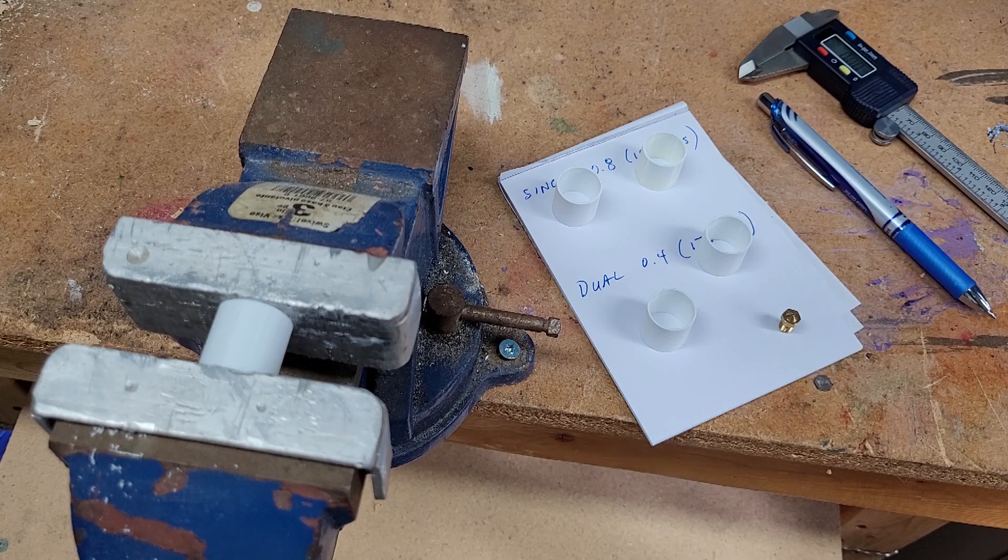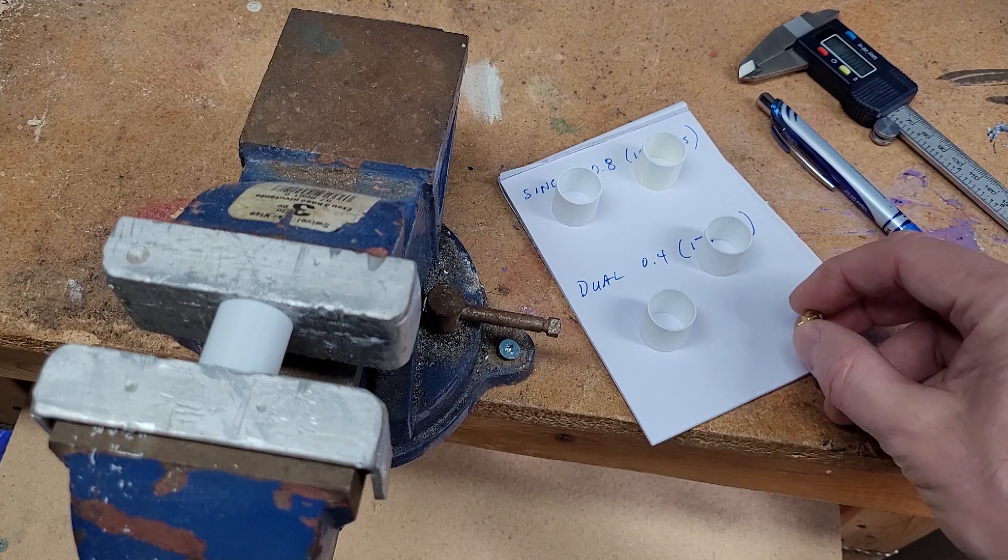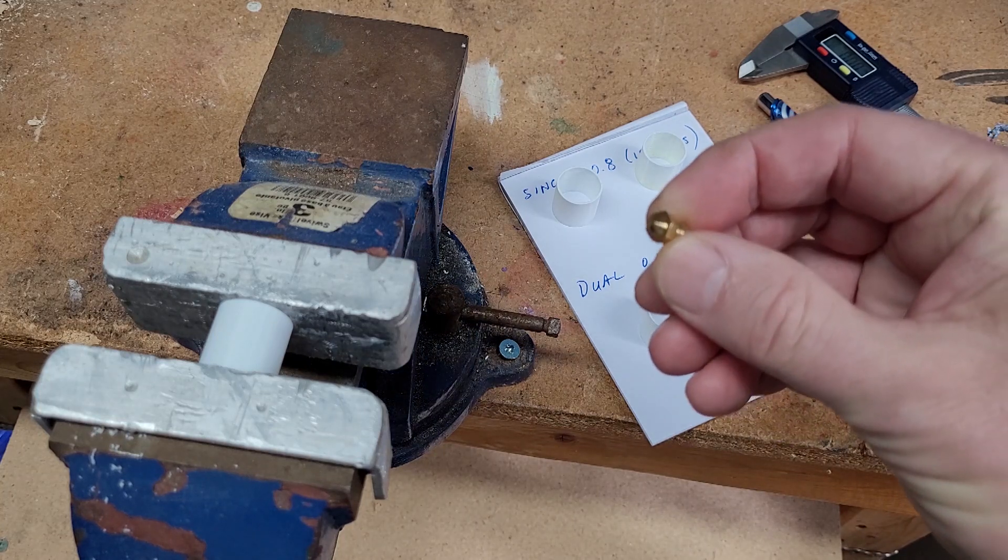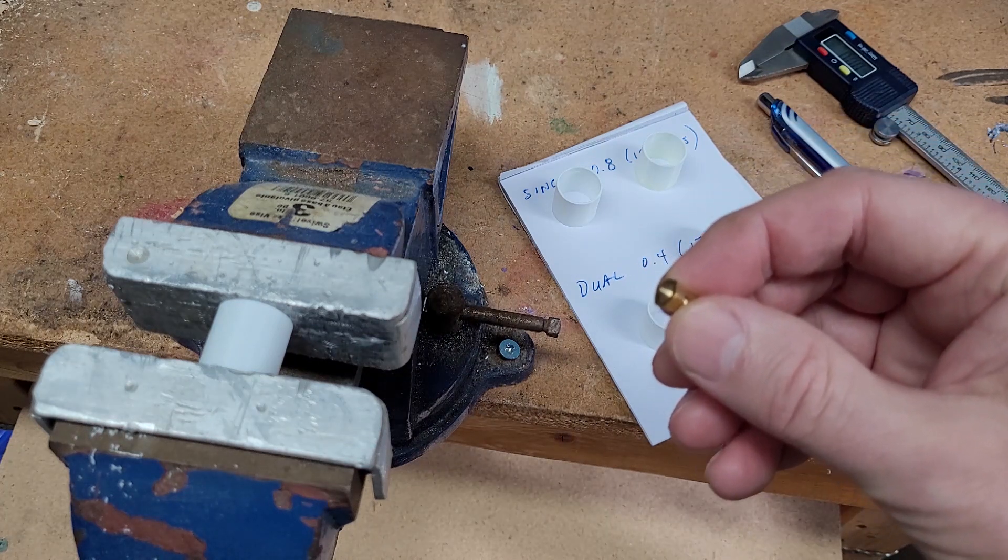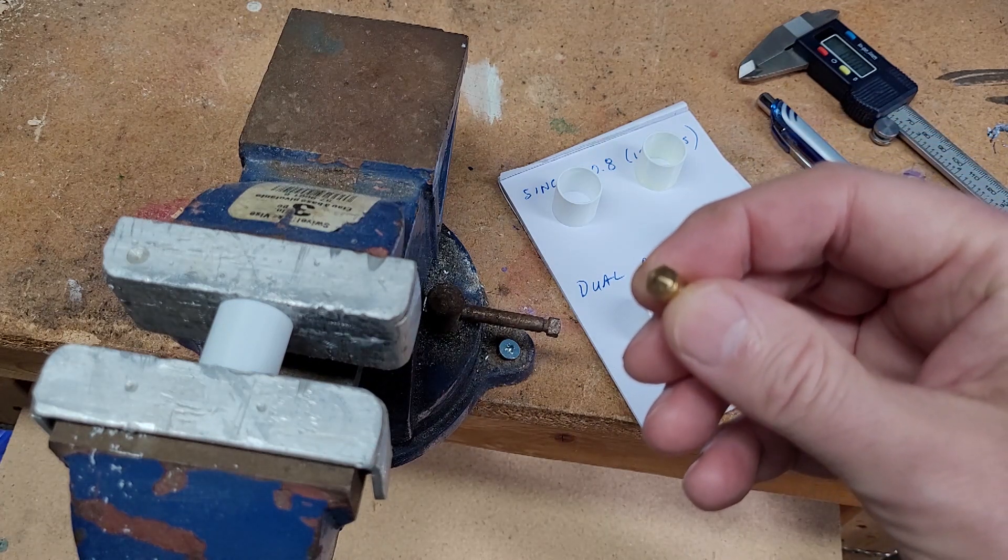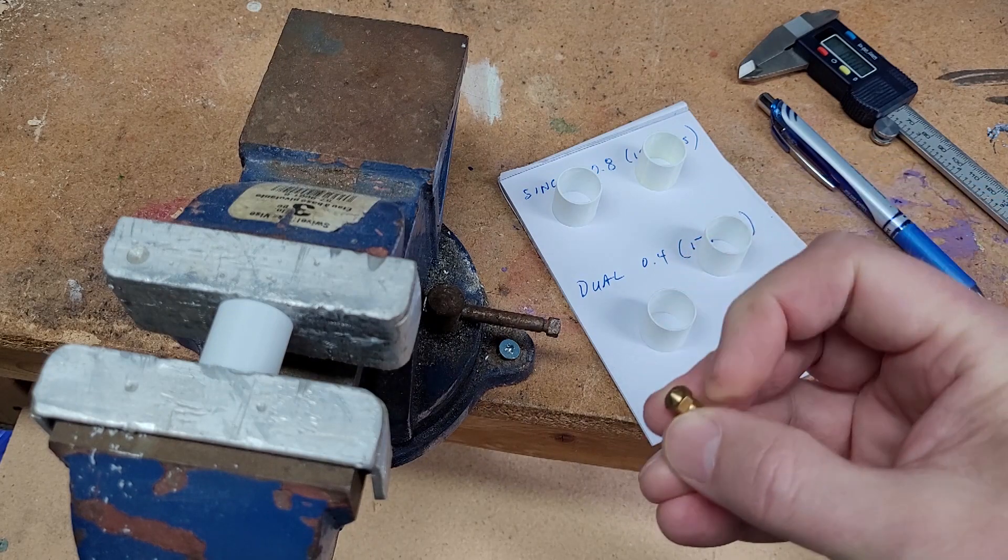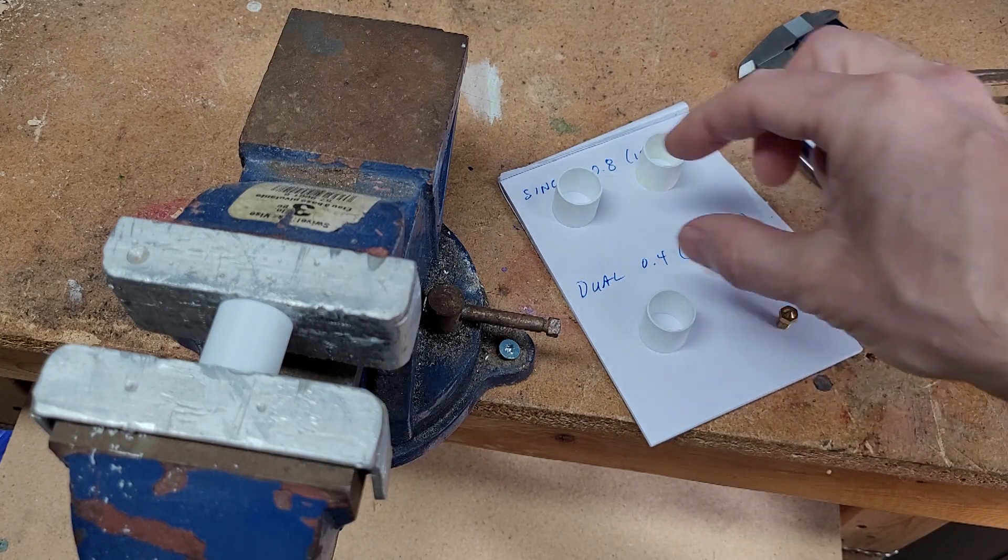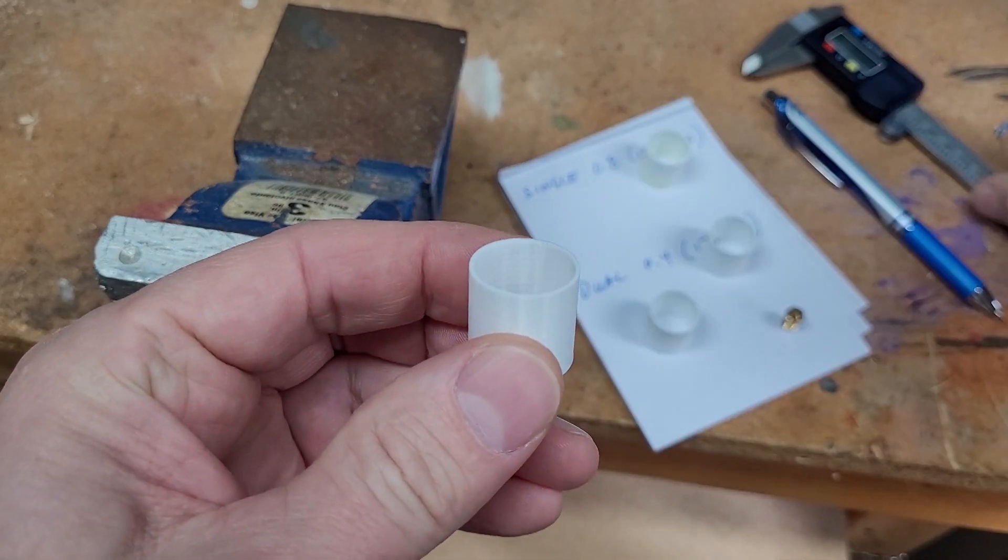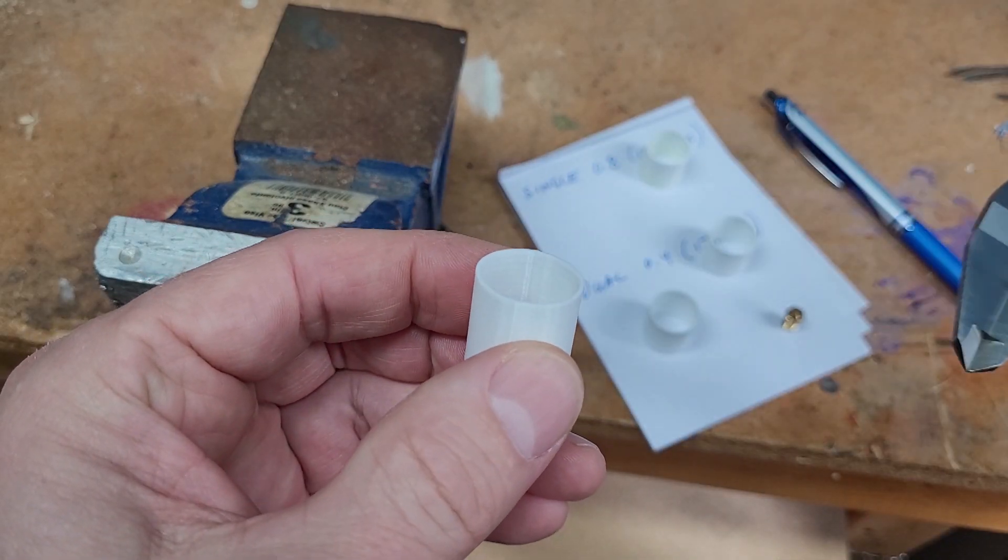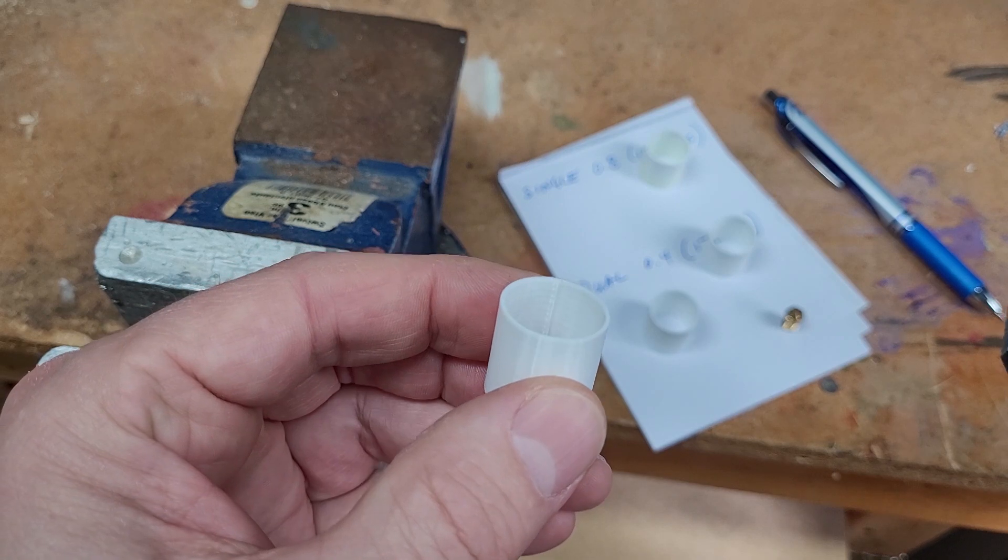So prior to printing the lightsaber, I never knew that you could print a significantly larger line width than the width of the actual nozzle itself. So this is a 0.4 millimeter nozzle and I went and printed a single wall that is 0.8 millimeter thick. So the question was, can we print faster and is it stronger?